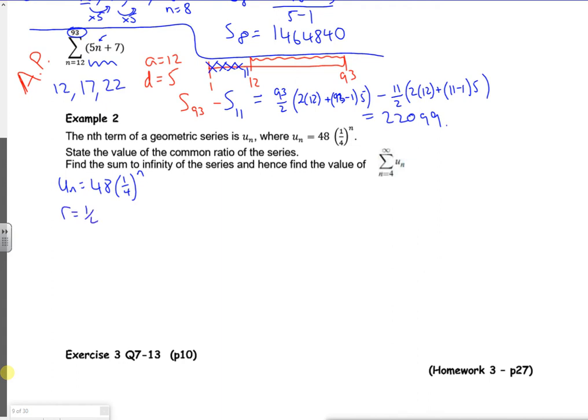Then it says find the sum to infinity. If I find the first term, so that's when n is one, I've got a. It's being 48 times by a quarter, so a is going to be 12 there. I want the sum to infinity.